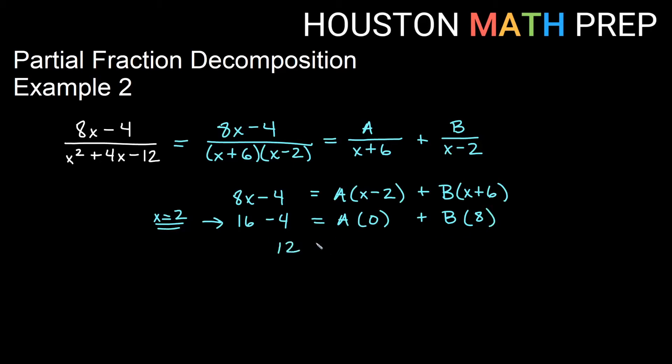So here we'll get 12 equal to 8B. When we divide both sides by 8, we'll get 12 over 8, and we'll get B equal to 3 halves. This is our example where we're intentionally doing something where we get fractions for A and B, just so you can see how to do it.